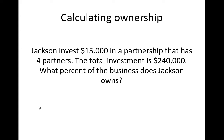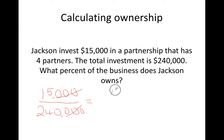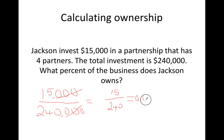Jackson invests $15,000, so we write 15,000, and then the total investment by all of them is $240,000. Let's find the decimal value of that. There are three zeros here and three zeros there, so we can cross them out. We are left with 15 over 240. My calculator gives me 0.0625.